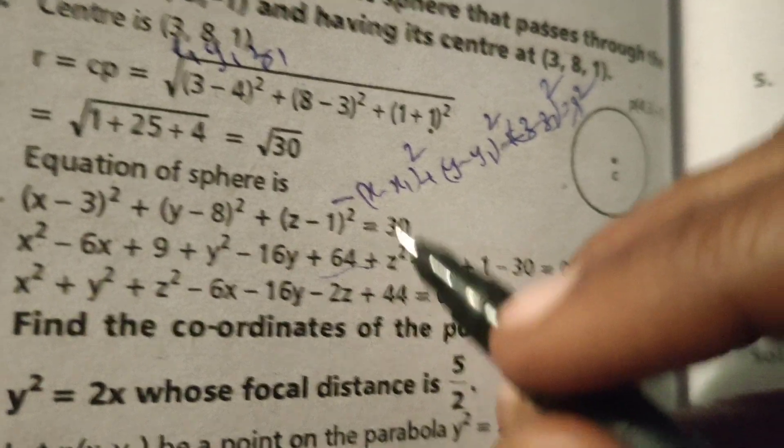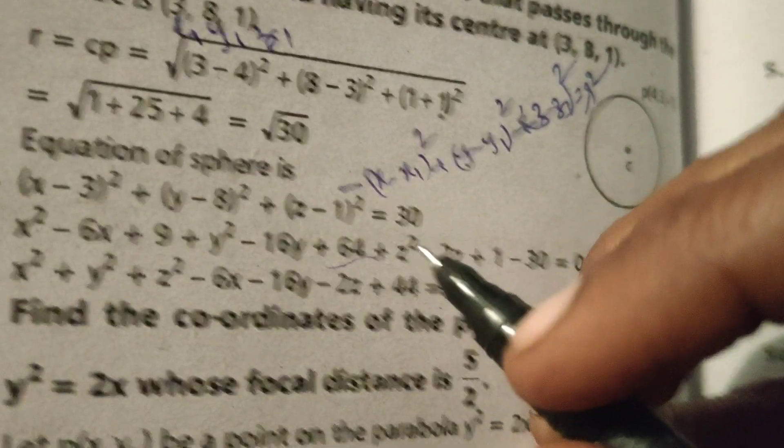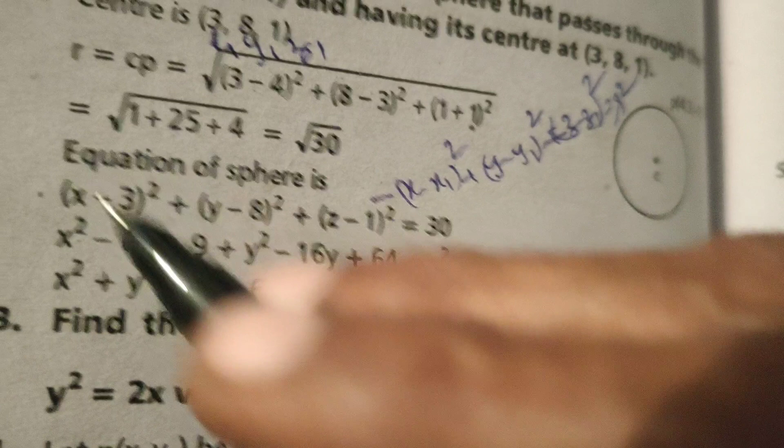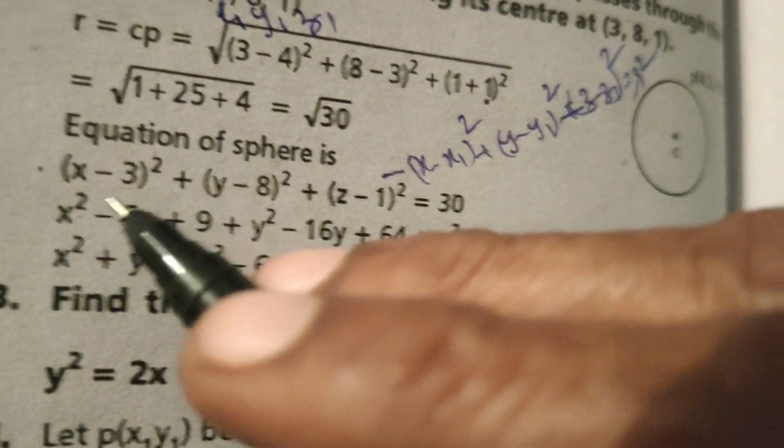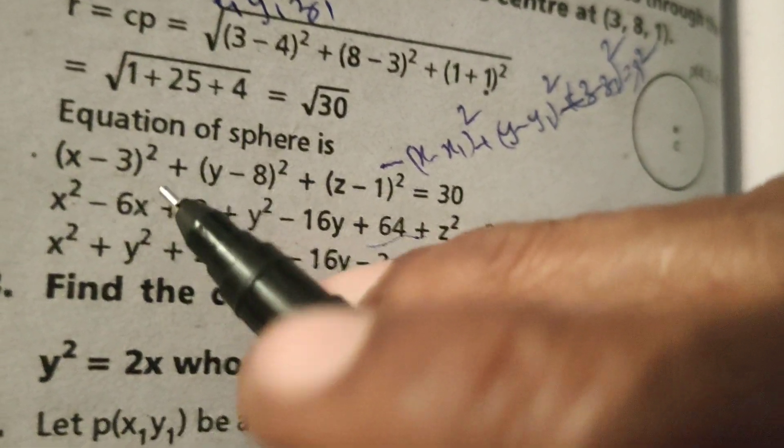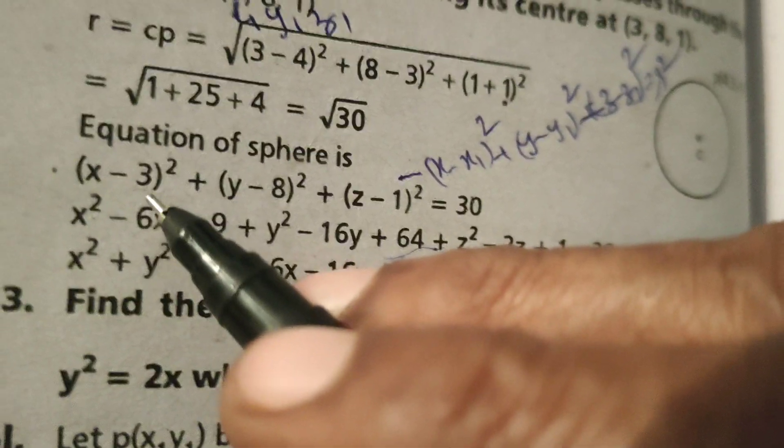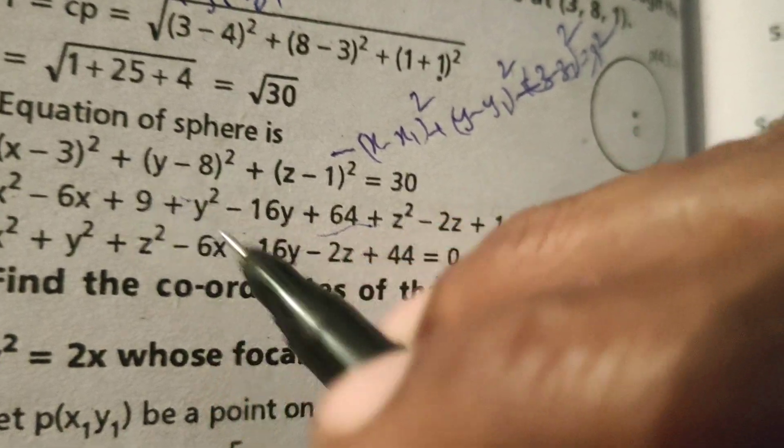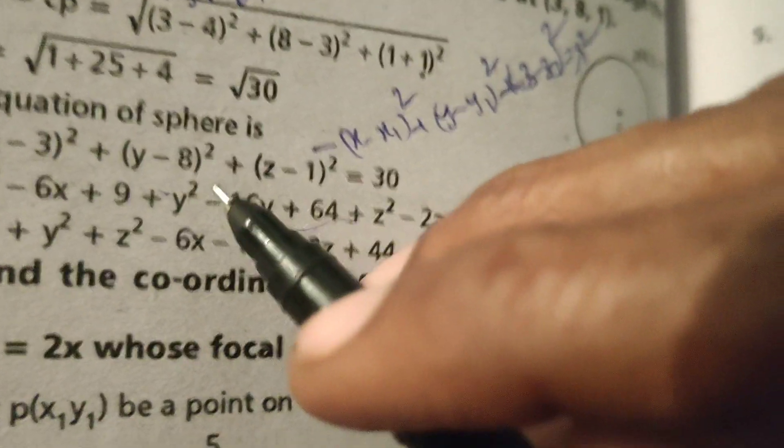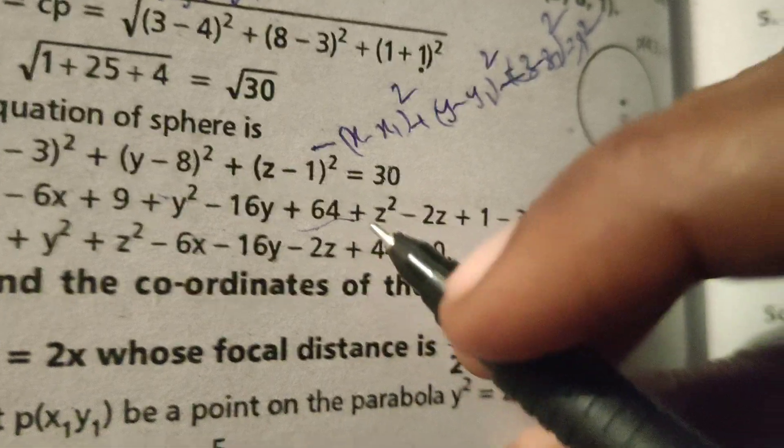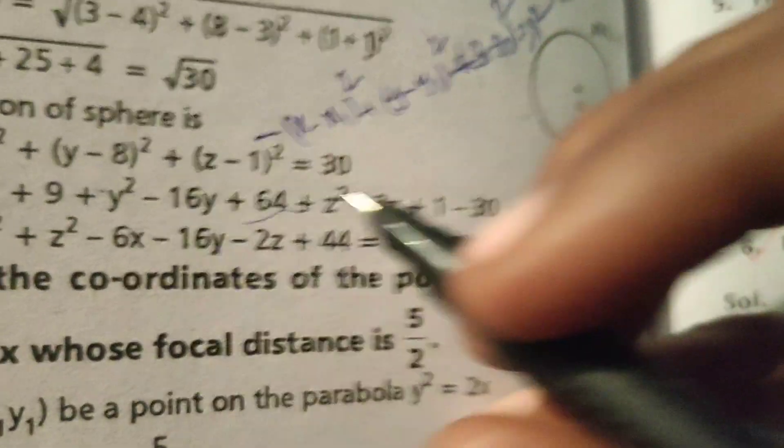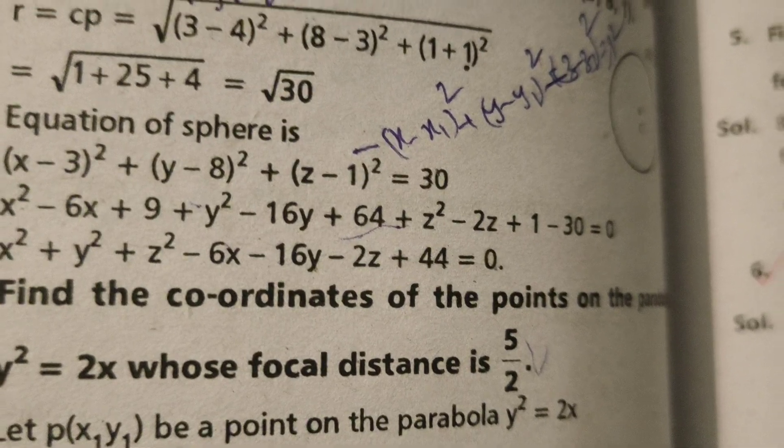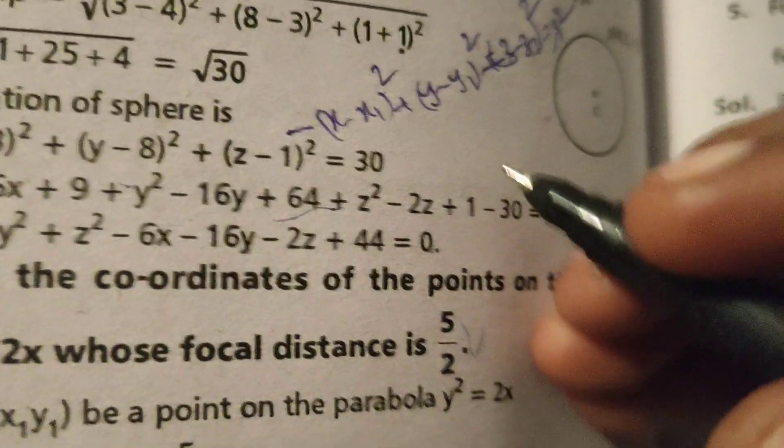(x - 3)² plus (y - 8)² plus (z - 1)² equals r² equals 30. Substitute the values: x² - 6x + 9 using the formula (a - b)², plus y² - 16y + 64, plus z² - 2z + 1 equals 30.